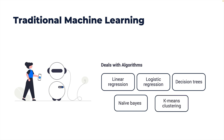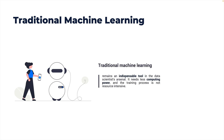Traditional machine learning deals with algorithms such as linear regression, logistic regression, decision trees, Naive Bayes theorem, and k-means clustering. These are some of the mathematical models applied in traditional machine learning, and along with data, they are used to train the models. Traditional ML remains an indispensable tool in a data scientist's arsenal — it needs less computing power and the training process is not resource intensive, meaning you can train traditional ML models on a desktop PC or a Mac without requiring a GPU or highly powerful compute resource.